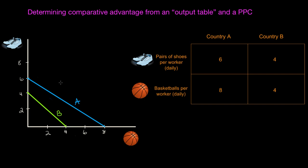If we look at our PPCs in the graph on the left, we see the potential outputs of two goods — shoes and basketballs — for two different countries: country A in blue and country B in green. The data on this PPC is also represented in the table on the right. Country A can produce up to six pairs of shoes per worker or up to eight basketballs per worker, whereas country B can produce up to four pairs of shoes or four basketballs with a single worker.